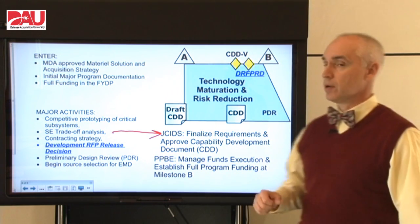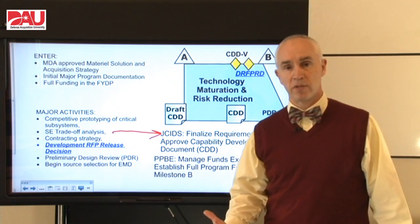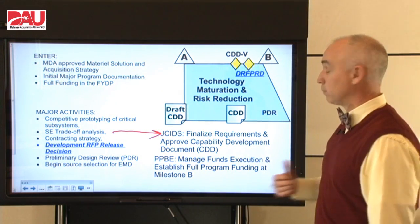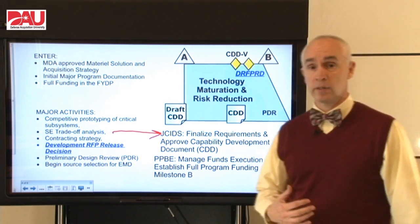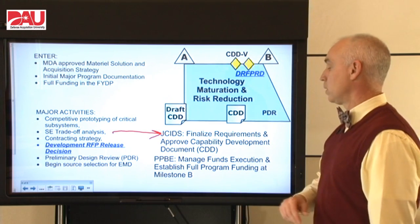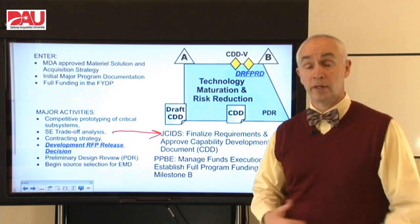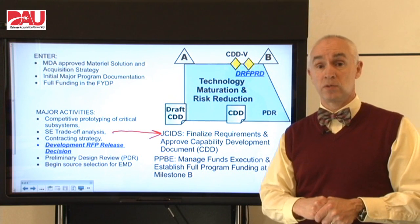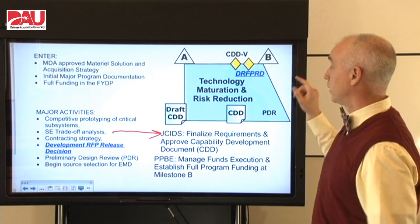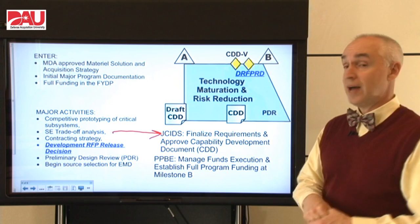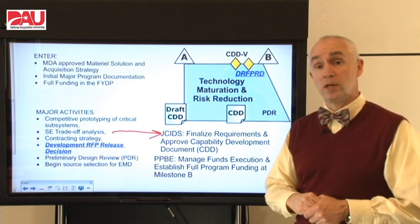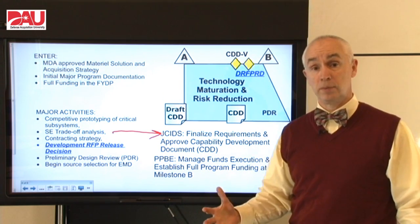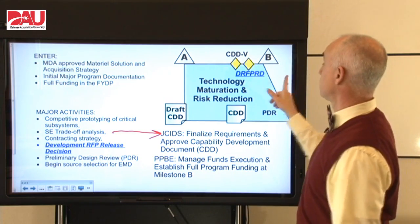Financially, we've got to manage our funds execution — how we are obligating and expending our funds — and we also have to make sure that we have full funding for the program in the out-years when we hit Milestone B so that we're in that Future Years Defense Program again. Once we have matured our technology and retired the program risk to an adequate level, we're ready for Milestone B and the next phase.